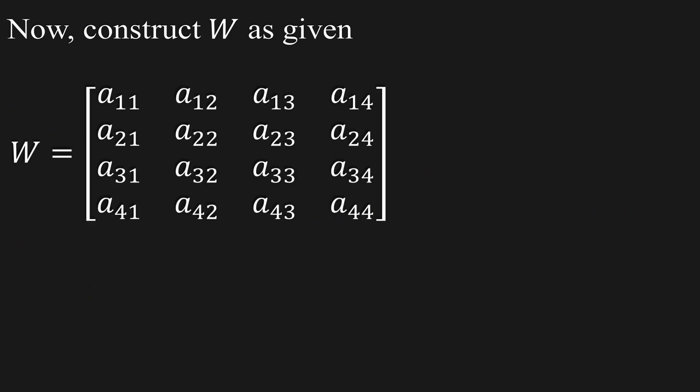Now, construct W as given: W is a 4×4 matrix. The sum of indices along the arrow is 2. According to the given condition, we have a11 = 0.